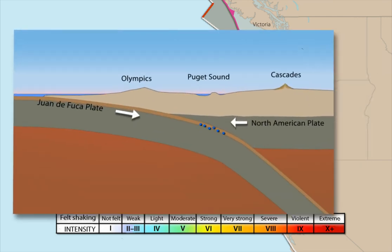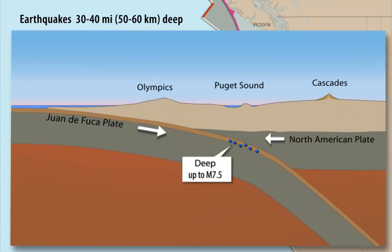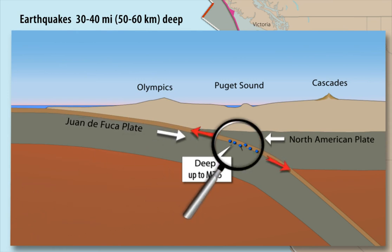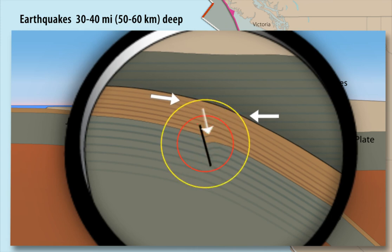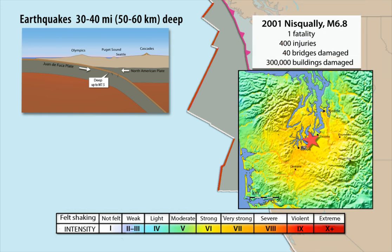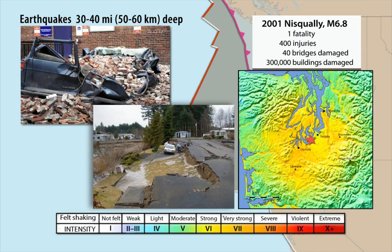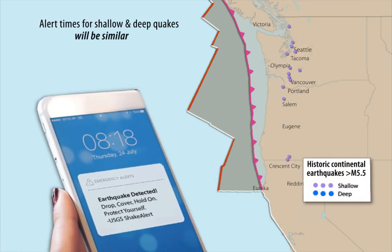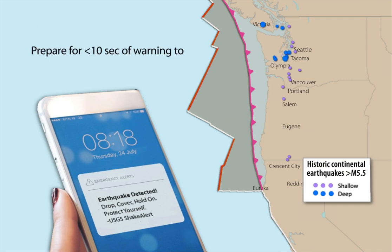Earthquakes that occur around 50 kilometers deep within the subducting Juan de Fuca Plate often happen where the brittle subducting plate bends as it dives beneath and pushes on the North American Plate. An example is the 2001 magnitude 6.8 Nisqually earthquake, which generated strong ground shaking in the Puget Sound. Deep earthquakes as large as these happen every 30 to 50 years and will account for up to half of ShakeAlert-powered alerts. ShakeAlert could provide about the same amount of warning time for shallow crustal earthquakes and deep earthquakes — prepare for fewer than 10 seconds of warning before strong shaking arrives.